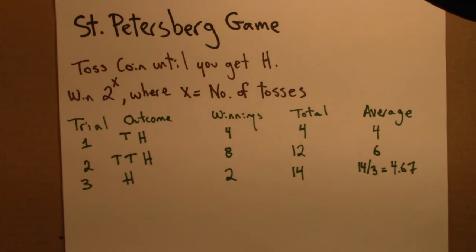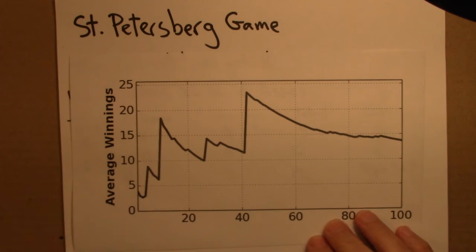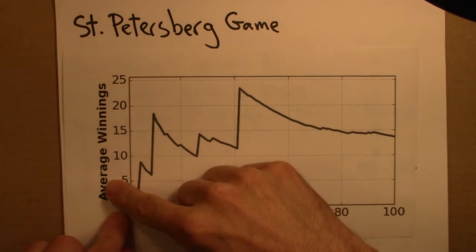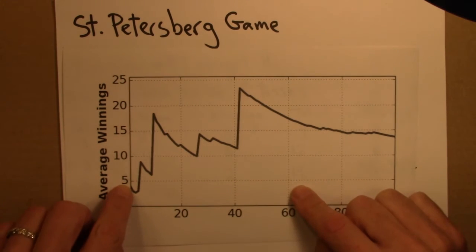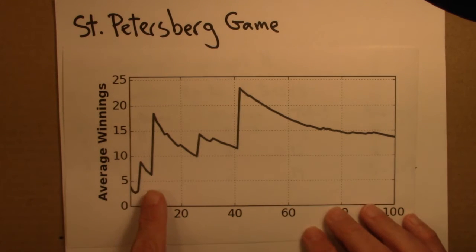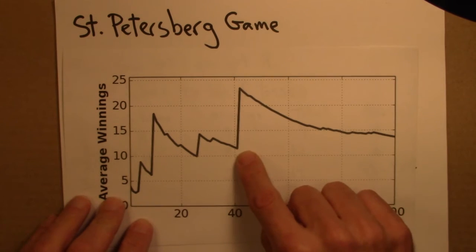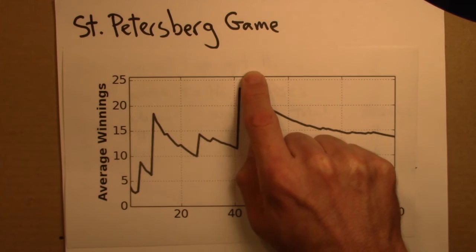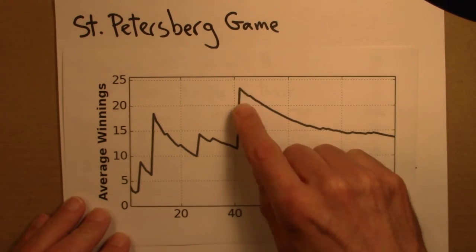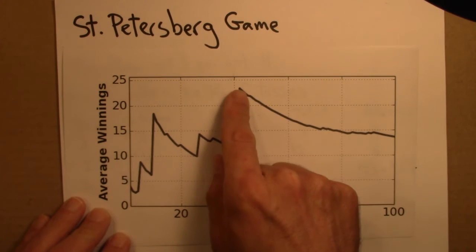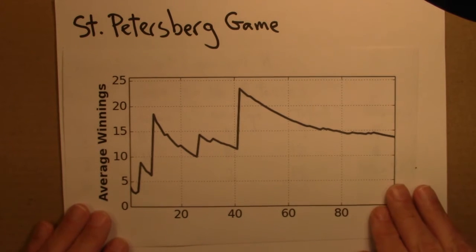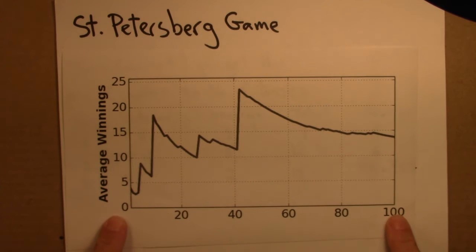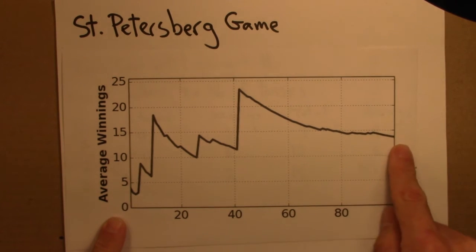We'll start with an experimental approach. I wrote a computer program to simulate the St. Petersburg game. Here's what happens to the average for 100 trials. The average looks like I won 4 the first time, and then it drops down. Then it had a big payoff and the average spikes, and then drops down again. The big payoffs are these big spikes upward — maybe a payback of 128 here. We've done it 100 times and it kind of looks like it's going to 15, maybe 14 or sliding down to 12.